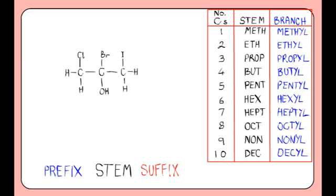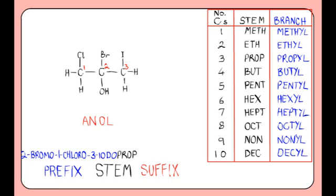Let's try this compound. It has a 3-carbon chain, so the stem is 'prop'. There are chlorine, bromine and iodine atoms on positions 1, 2 and 3 respectively. Note how the numbering starts from the carbon with chlorine rather than iodine, because chlorine comes before iodine alphabetically. We then order the prefixes alphabetically: 2-bromo, 1-chloro, 3-iodo. The compound is an alcohol, so it has the suffix '-anol'. However, there are two places the OH group could go, so we state it's on position 2 by giving it the suffix '-an-2-ol'. Altogether, the compound is 2-bromo-1-chloro-3-iodopropan-2-ol.